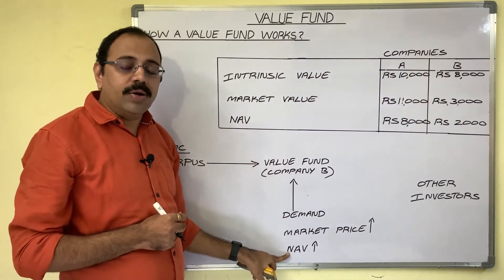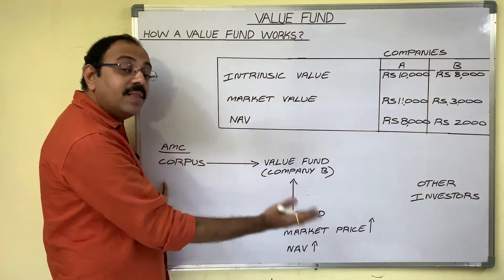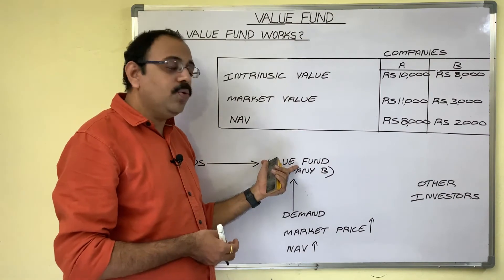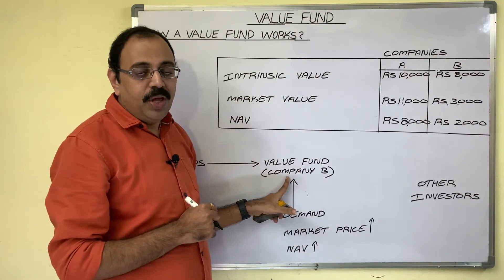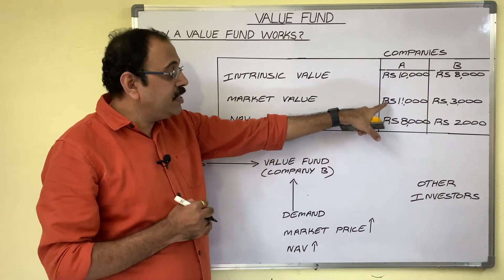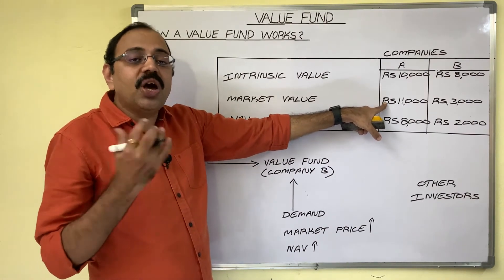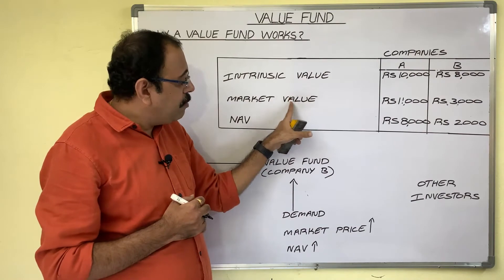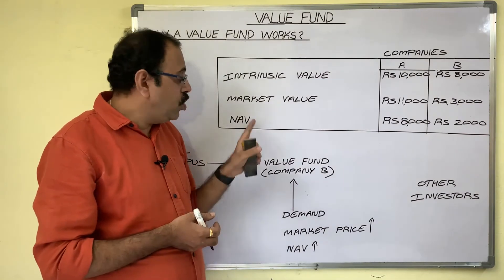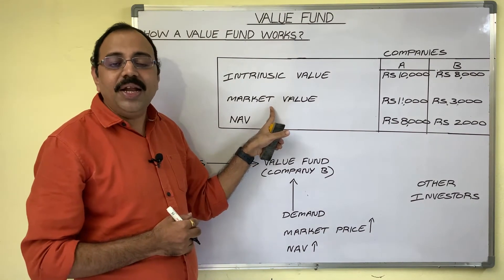Thus the fund investor acquires mutual fund units at lower NAVs. When demand increases and NAV rises, investors can redeem units at higher profits. On the other hand, if you purchase a fund unit containing companies like A — where market price has already reached a high level — even in favorable bull market conditions, you cannot expect much further increase in market price, and therefore you cannot expect a high increase in NAV. This is how value fund strategy works.